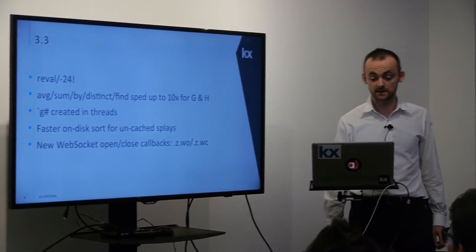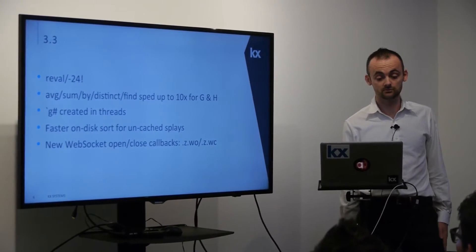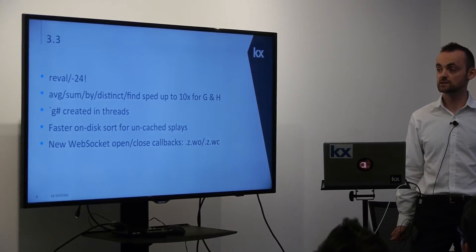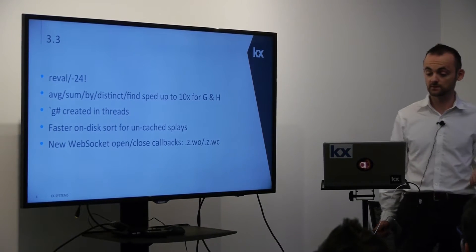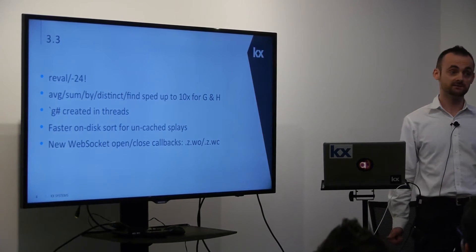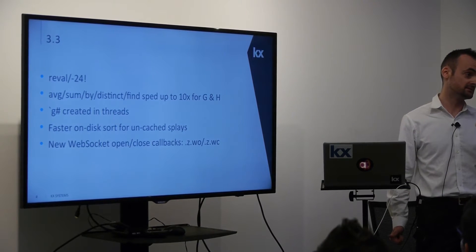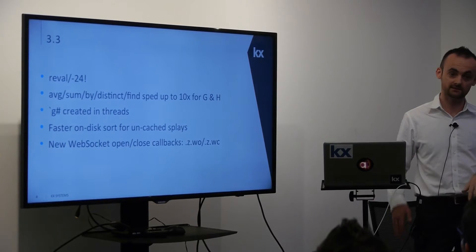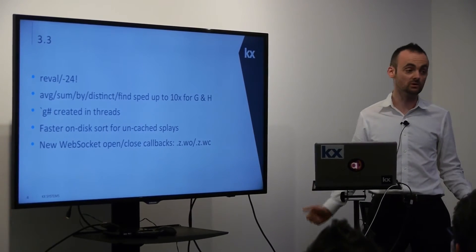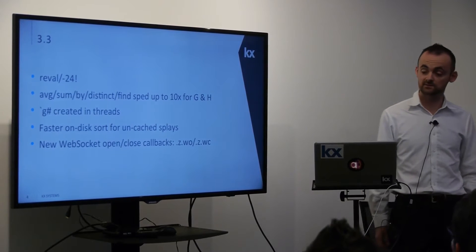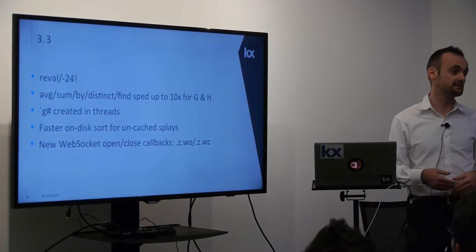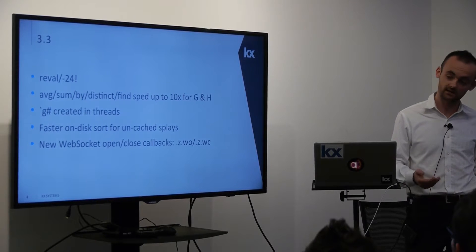One of the first new features is the `reval` function, or `-24!` band. That's read-only evaluation. You can put it inside message handlers and just say evaluate it, as if the minus-zero sign is always on. So you can have a super user with regular access, and then every other user with more restricted access. That's proven quite popular — it should make things better from an access authentication viewpoint.